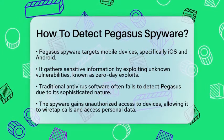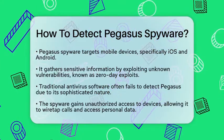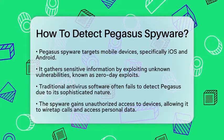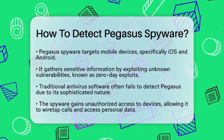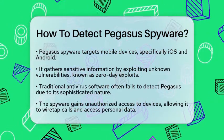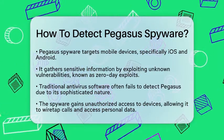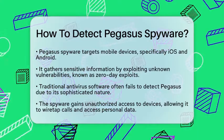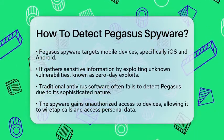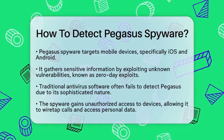This makes detection particularly tricky, since traditional antivirus software often fails to catch it. Pegasus spyware operates by gaining unauthorized access to devices. Once inside, it can wiretap calls, access photos and videos, read messages, and control applications remotely. Because it uses advanced techniques to avoid detection, identifying it requires specialized forensic analysis.